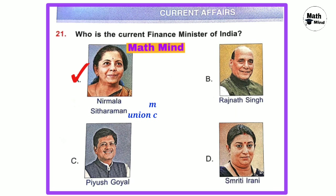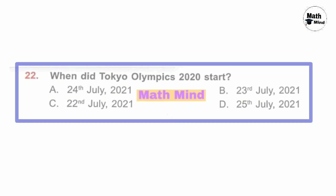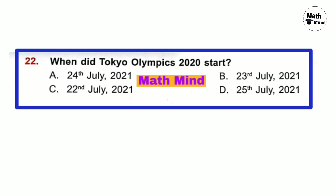Question number 22: When did the Tokyo Olympics 2020 start? Option B is correct — 23rd July 2021.